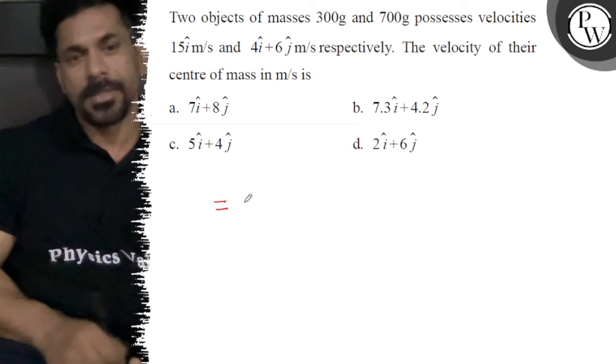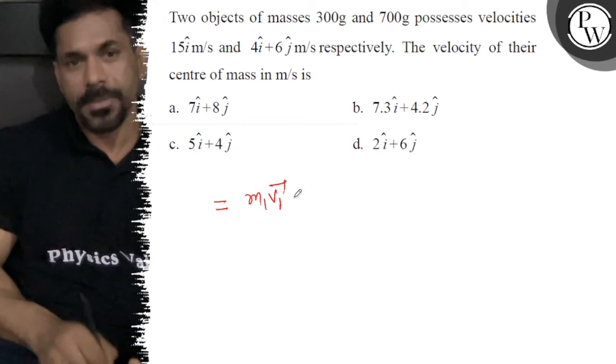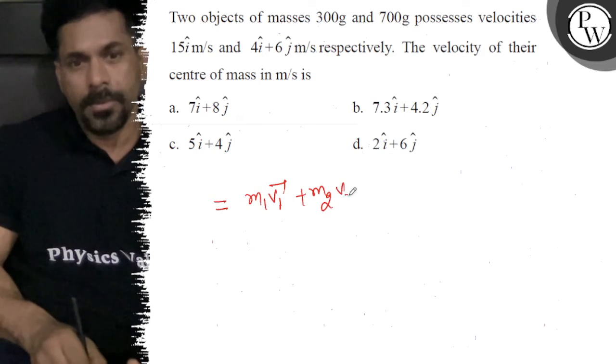The velocity of the center of mass is given by the formula: m1v1 plus m2v2, divided by m1 plus m2.